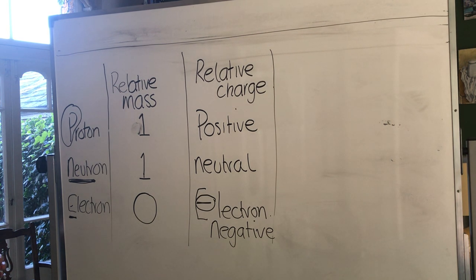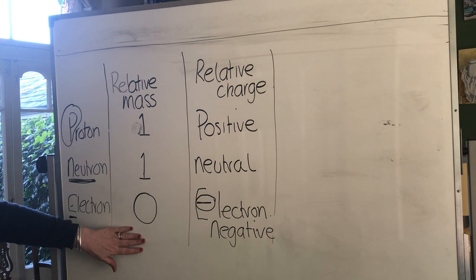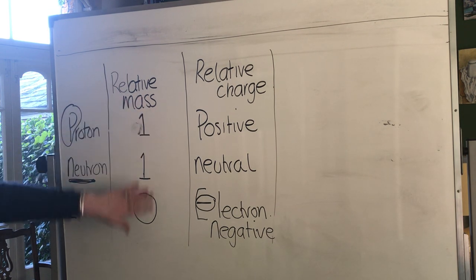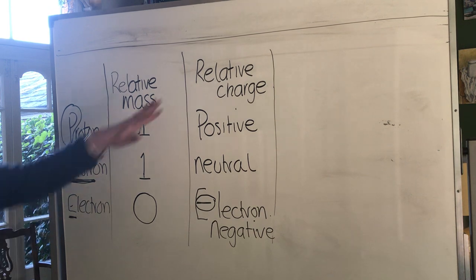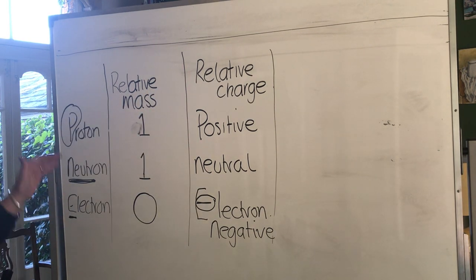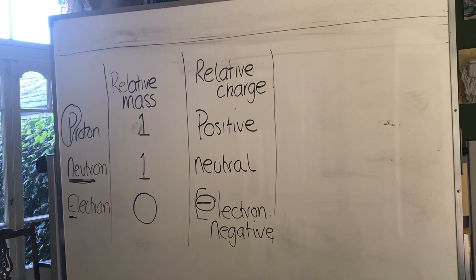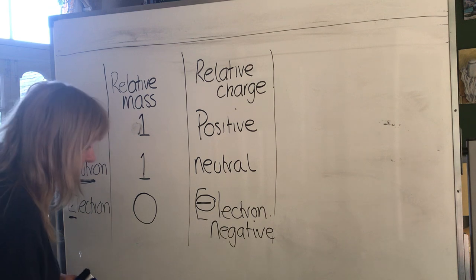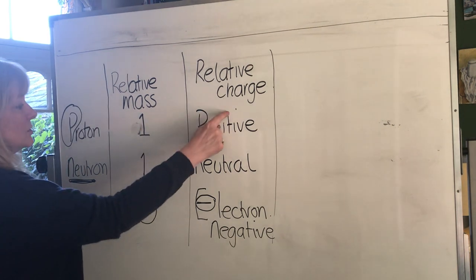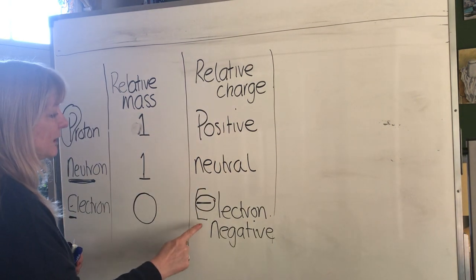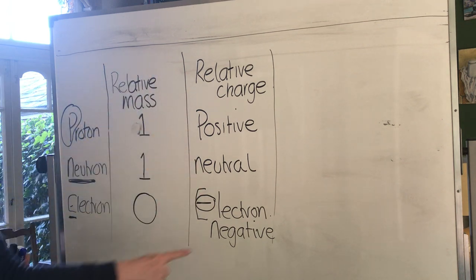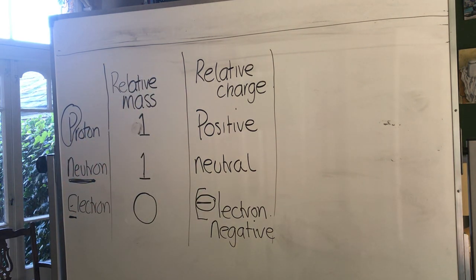How are they going to ask you that? They could leave out the mass column and get you to fill it in, leave out the charge column, or leave out entire rows. They could also ask a six-mark question: describe the mass and charge of these particles and where they are in the nucleus - which is actually quite an easy six-mark question. You can see where those six marks could come from - one, two, three, four, five, six.